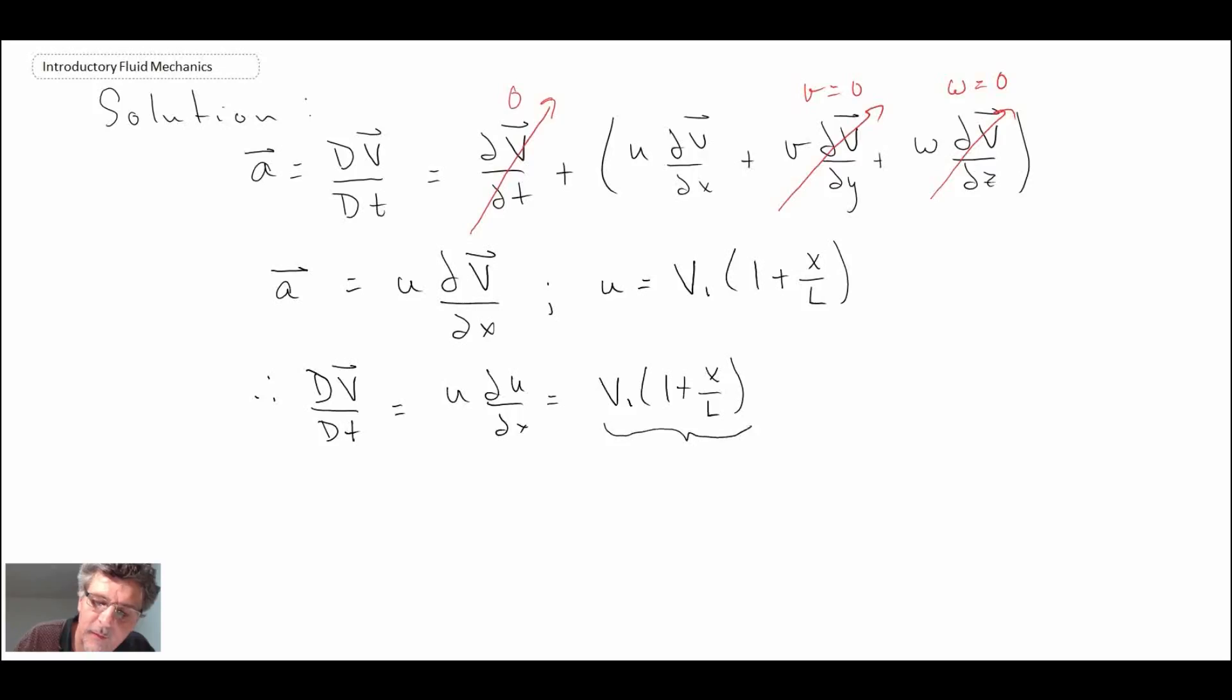This would be u and then we multiply it by du/dx. So du/dx would be v₁ over L. And with that we can then write out the acceleration in the x direction. So this would be the answer to the first part of the problem.